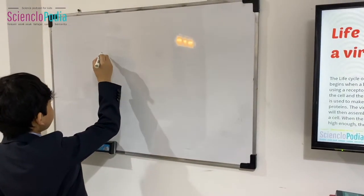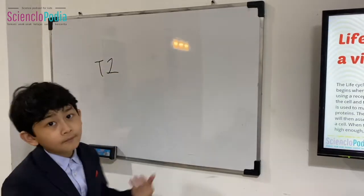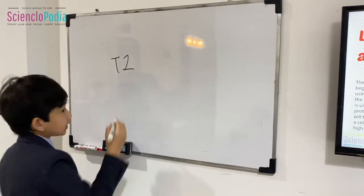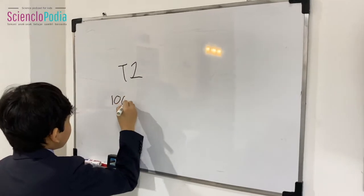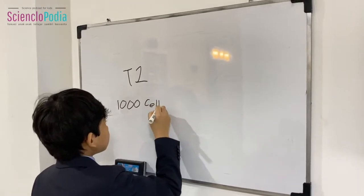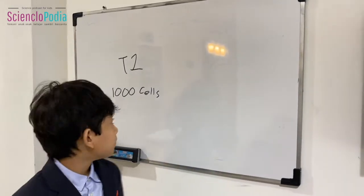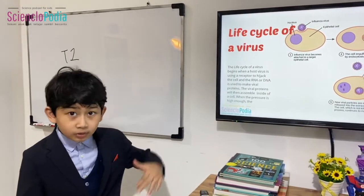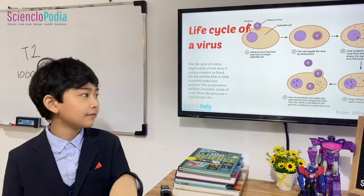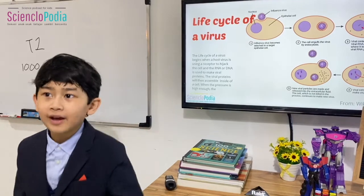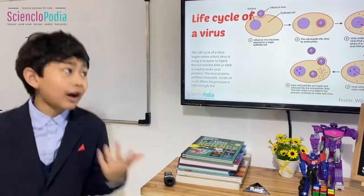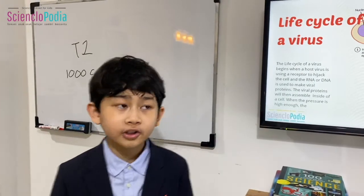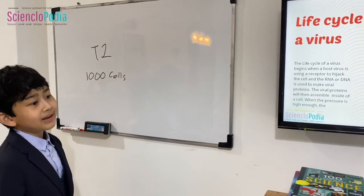For example, with the influenza virus, if a type one virus only encounters around one thousand cells, there would still be quite a lot of viruses produced because the growth is exponential. It can start with just one influenza virus infecting one cell, then jump up to a hundred, then ten thousand, and so on.